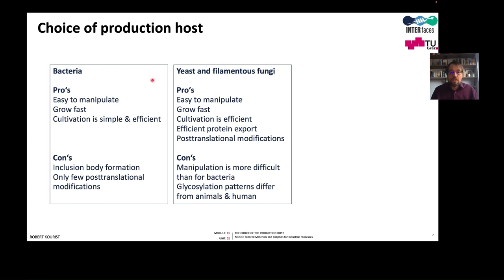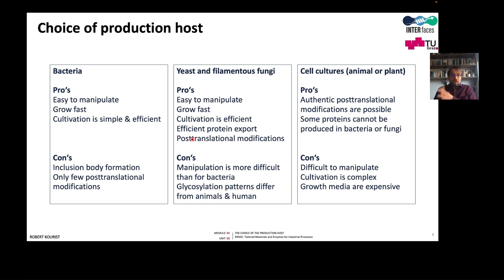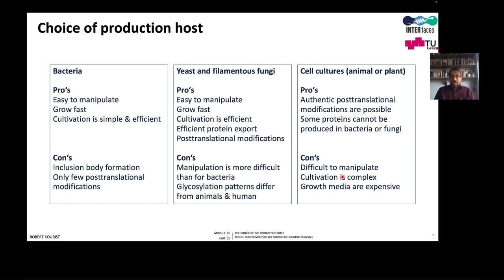In many cases bacteria are used as a host for research of an enzyme, because there we do not need to obtain large amounts of soluble enzyme, and then production is done in the fungal system. Fungal systems are also preferred for low-price enzymes simply because they are often more cost efficient. Cell cultures are very difficult and expensive to cultivate. They offer authentic post-translational modifications that are tolerated by the human immune system, and cell cultures are the method of choice for proteins that cannot be produced in bacteria and fungi due to post-translational modification requirements, disulfide bonds, or glycosylation patterns.